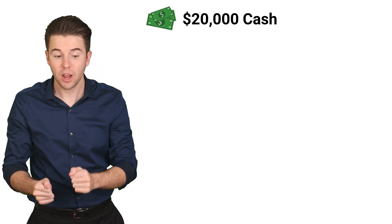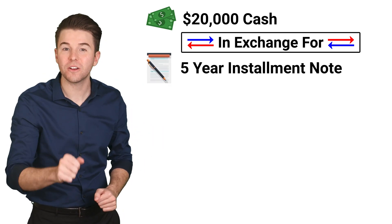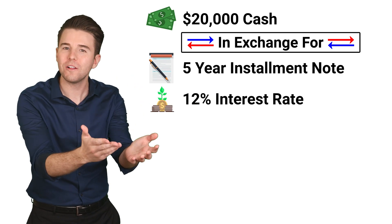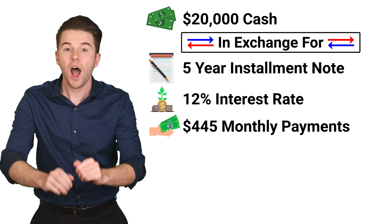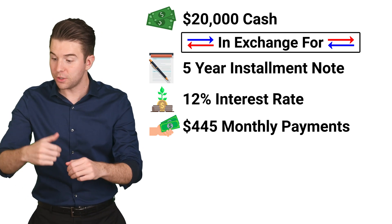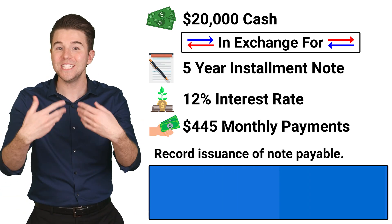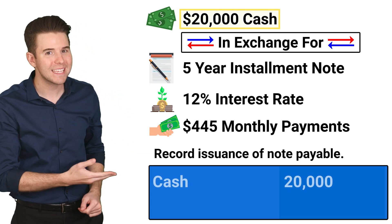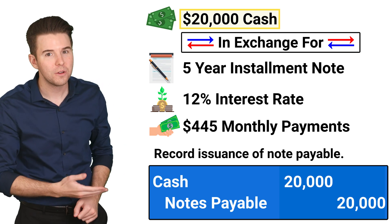Alright, let's run through an example. Assume a company borrowed $20,000 cash from a bank on January 1st. In exchange, the company signs and issues a five-year installment note to the bank with 12% interest and 60 monthly installment payments of $445 that include interest and principal. For the company to record the issuance of the note, we debit cash for $20,000 and credit notes payable for $20,000.